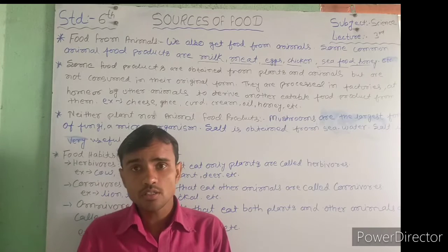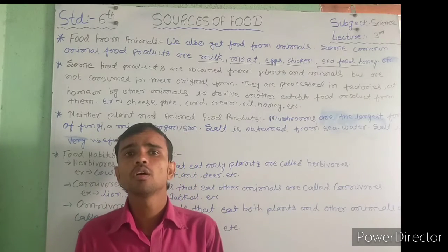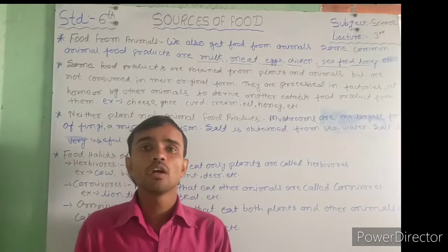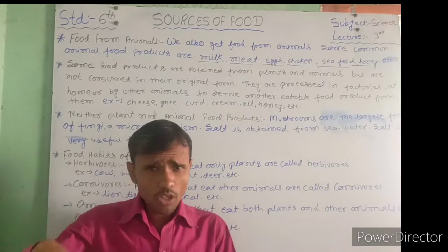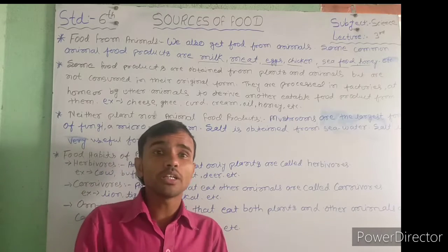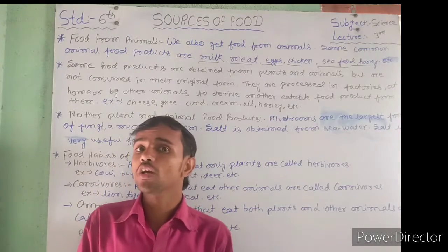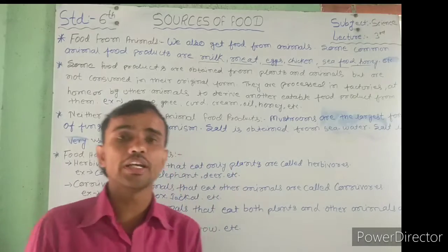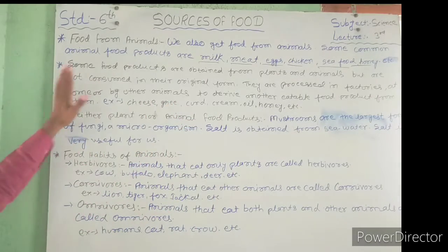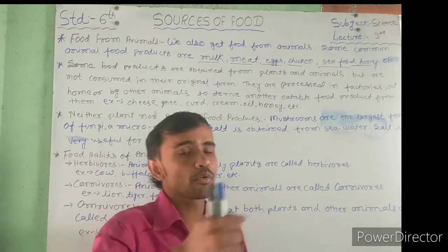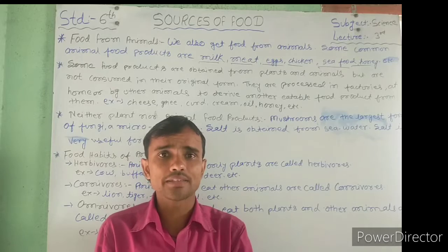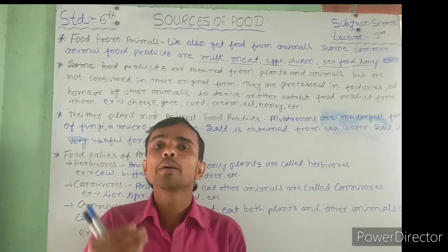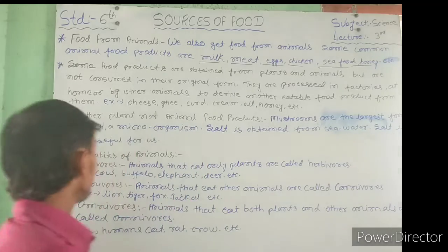Some examples of products made at home include ghee and curd. Honey is made when honey bees collect nectar from flowers and convert it into honey. Other examples include cheese, ghee, curd, cream, oil, and honey. Some products are made at home and some are made in factories.